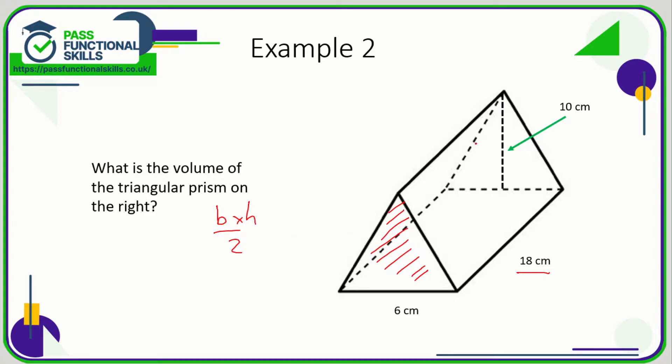6 times 10 is 60, divide that by 2 is 30. So 30 centimeters squared is the area of the front face.